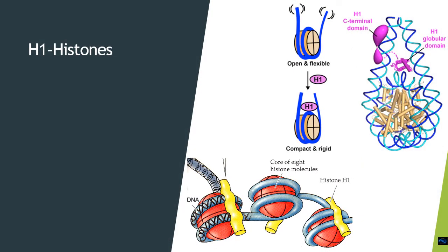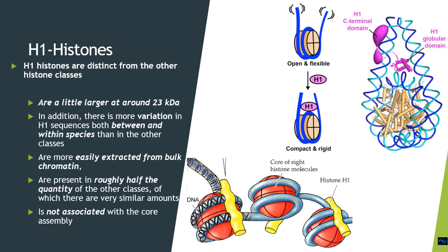H1 is somewhat distinct in structure as well as presence from the other histones in the nucleosome or chromatin model. H1 histones are a little larger than the rest of the histones and have more variation than the other histones. This variation is between and within species as well. They are easily extracted from the bulk of the chromatin.